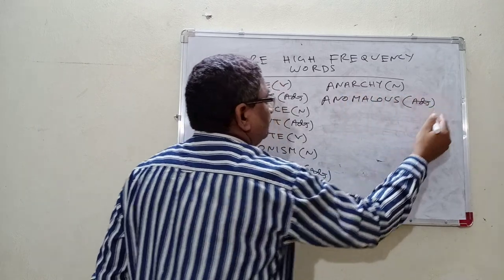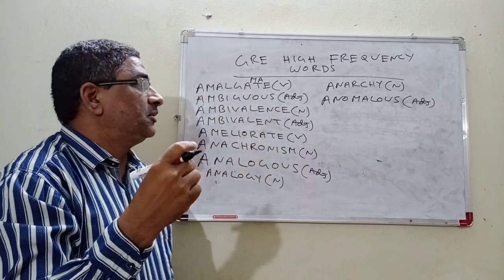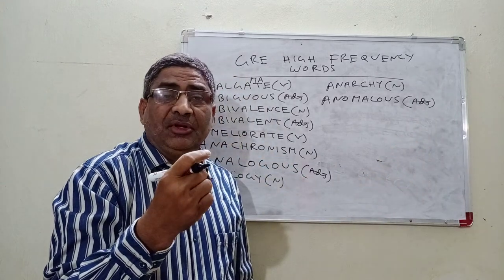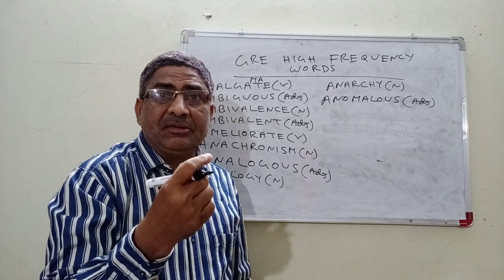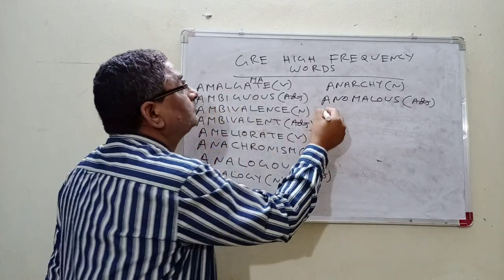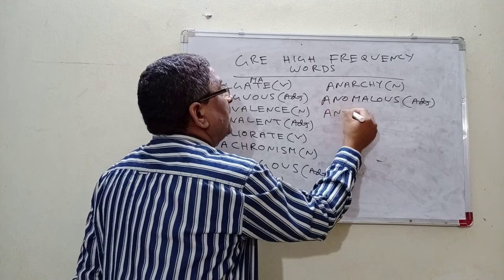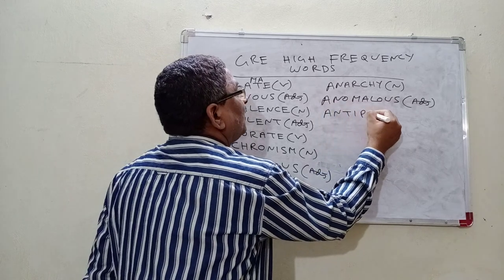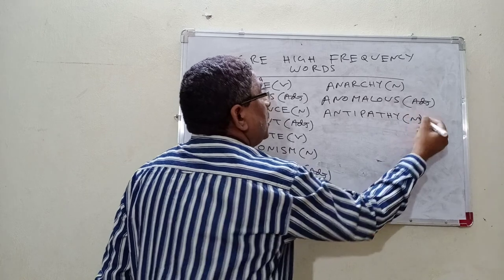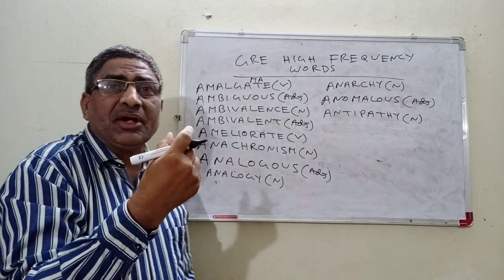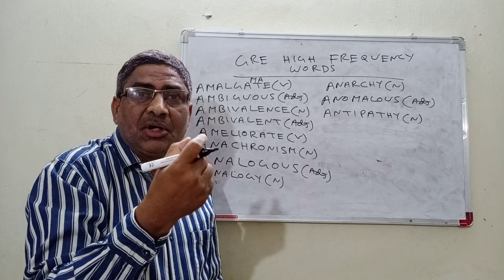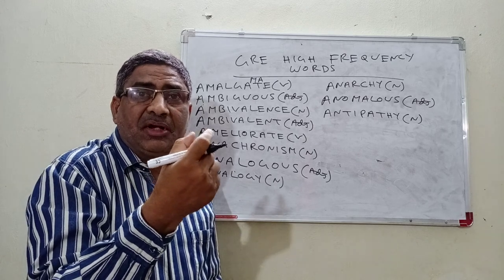Anomalous — meaning is abnormal or deviant. Antipathy — strong dislike. You do not like something; that's called antipathy.